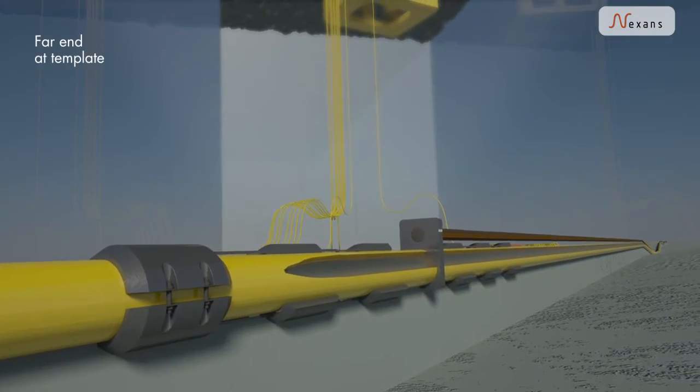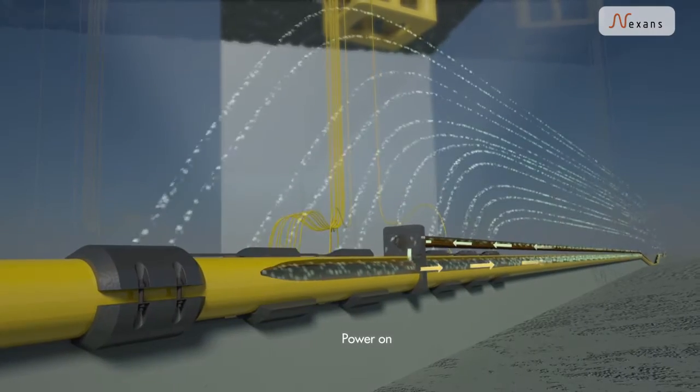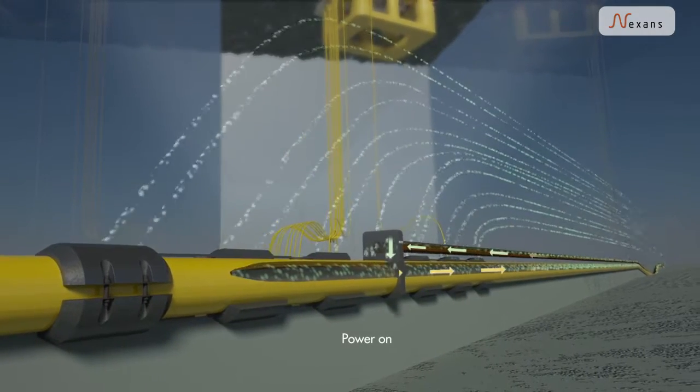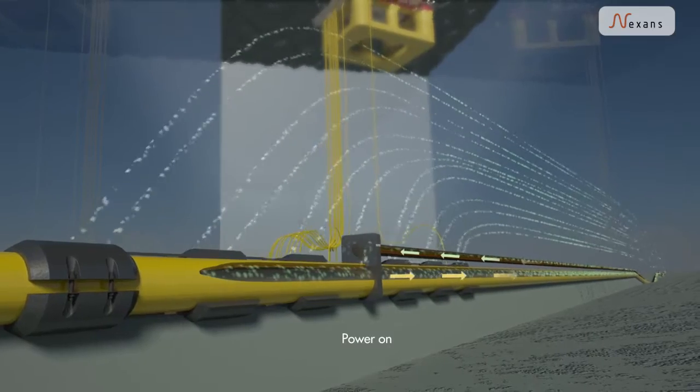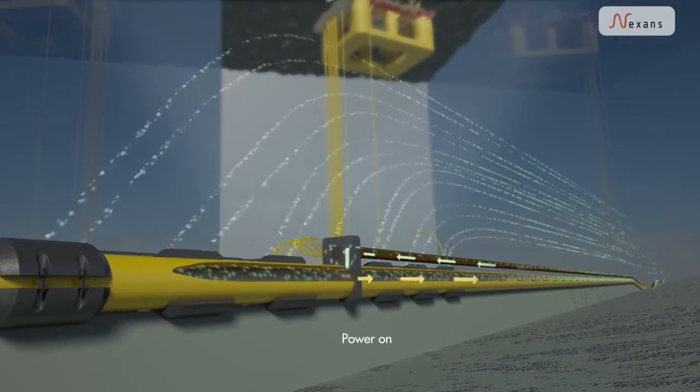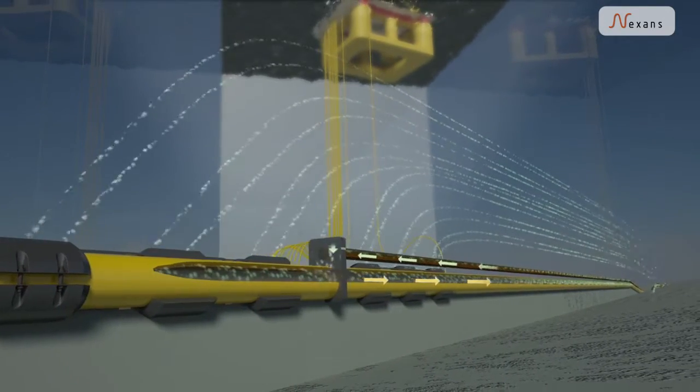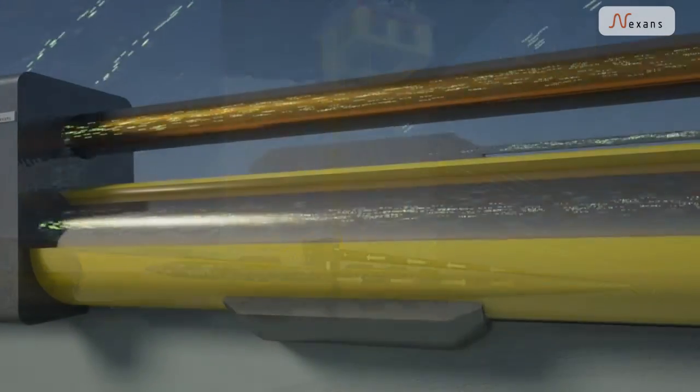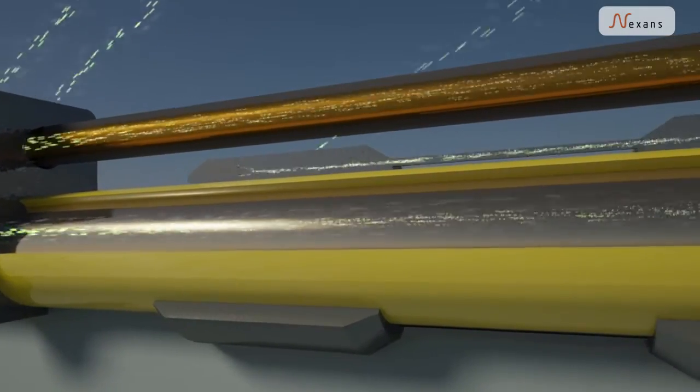The piggyback cable connects to the pipeline at the far end, close to the oil well. When the power is turned on, the pipeline is the primary conductor of the current, and most of the current takes this path.